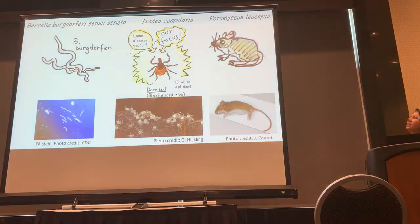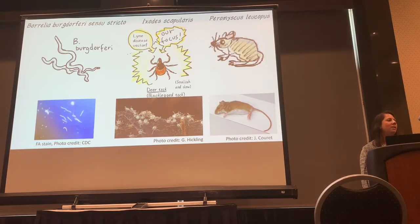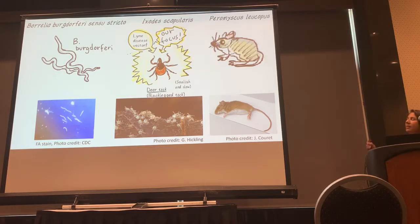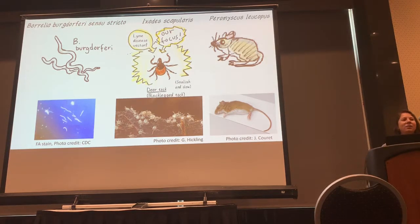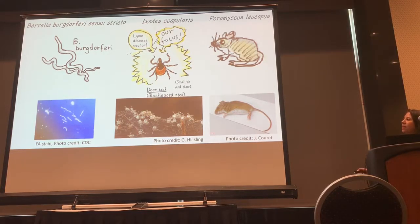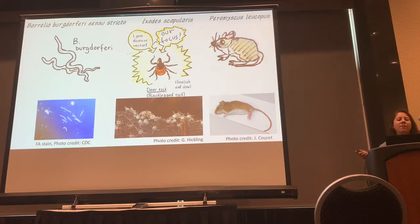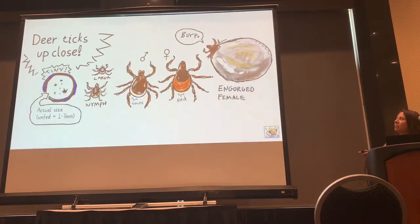Here are the players in Lyme disease. Borrelia burgdorferi is a bacterial spirochete, and in the United States we have the genus species Sensu Stricto. It's transmitted solely in the U.S. by this tick, Ixodes scapularis, the deer tick or black-legged tick. If you go out for a hike during this conference and go into the woods, you'll likely pick up one of these — right now it's really peak season for the nymphal deer ticks. The primary reservoir host is the white-footed mouse.